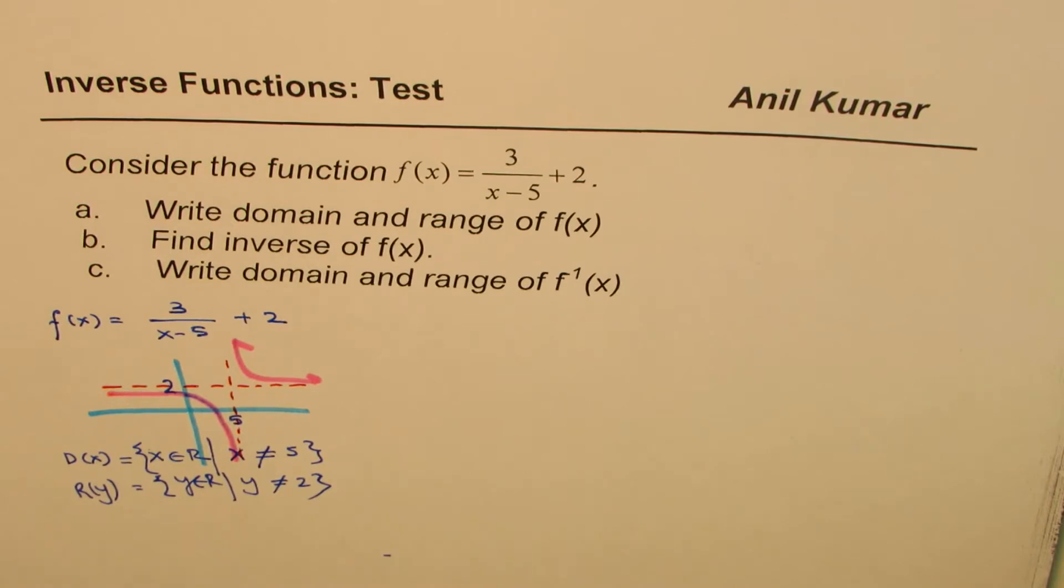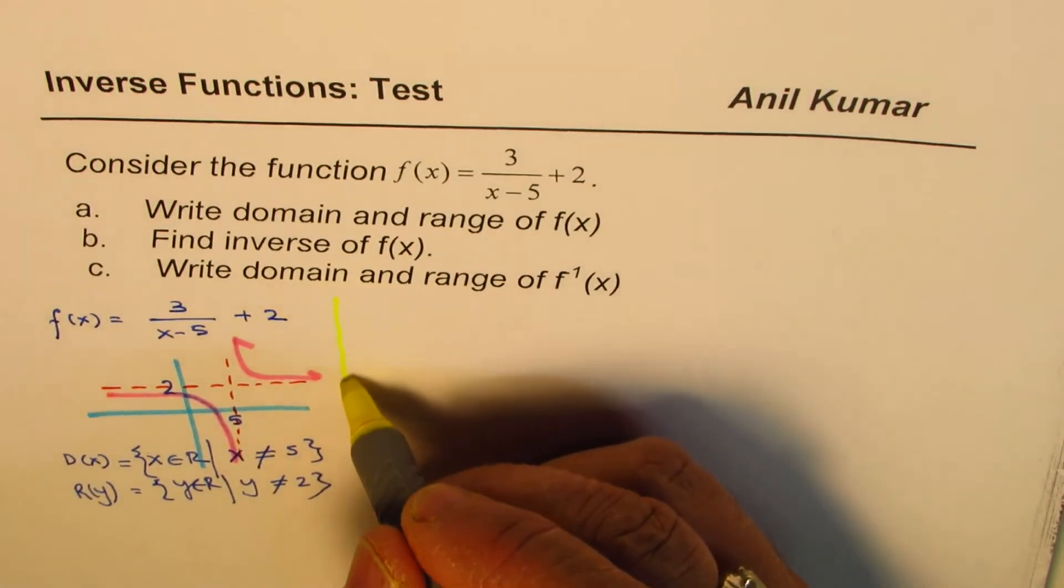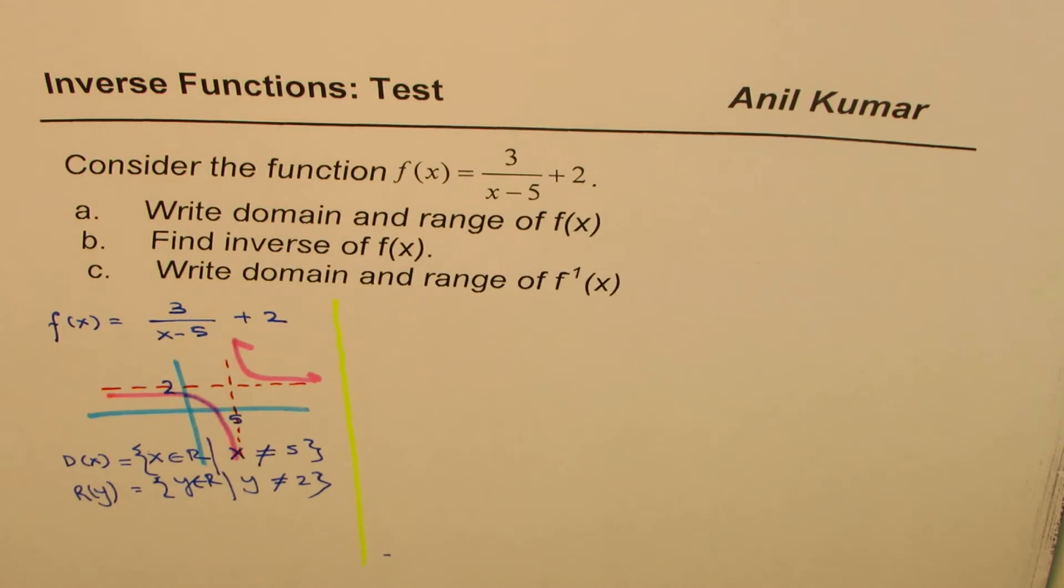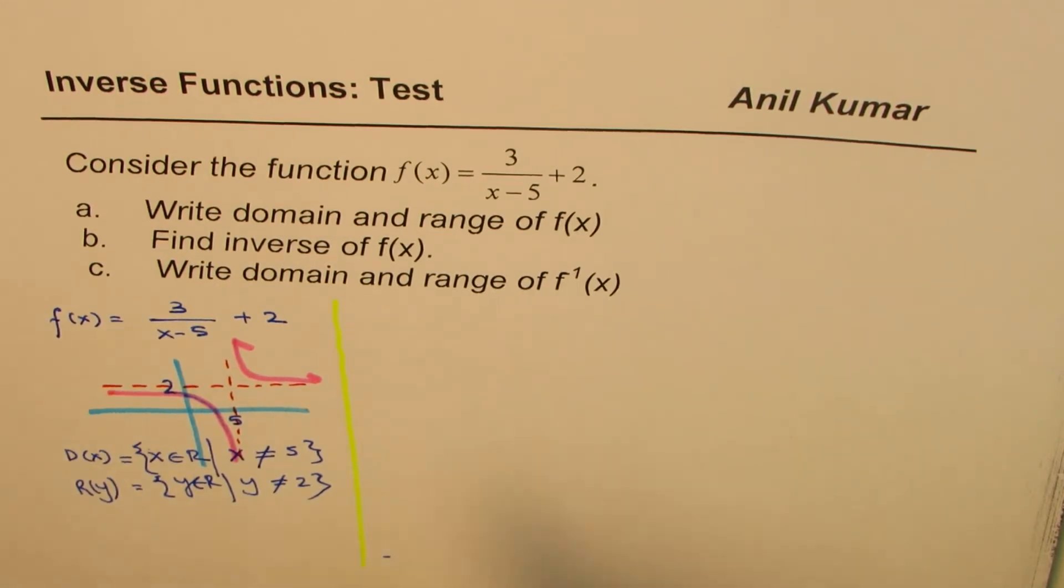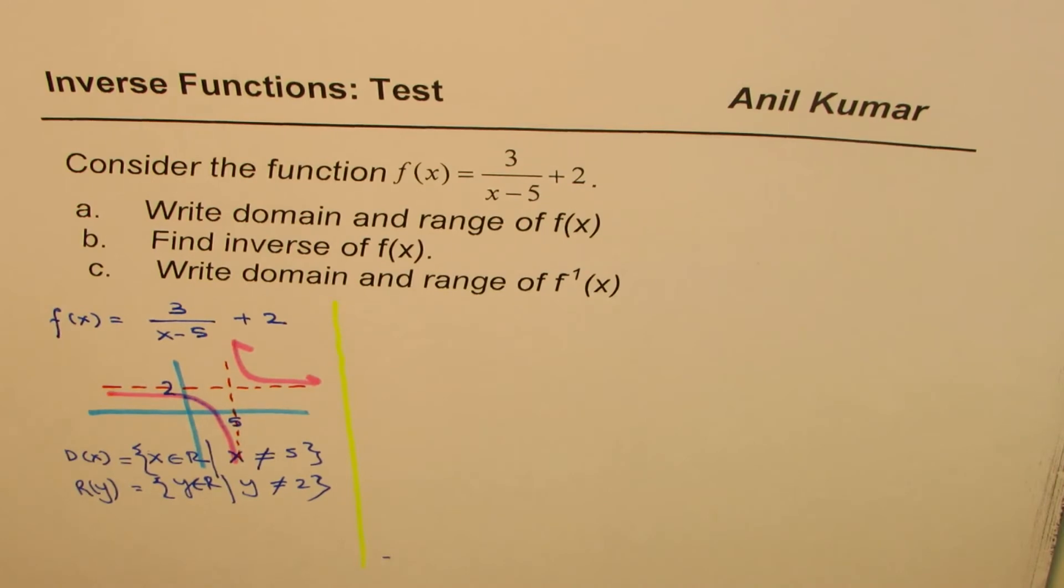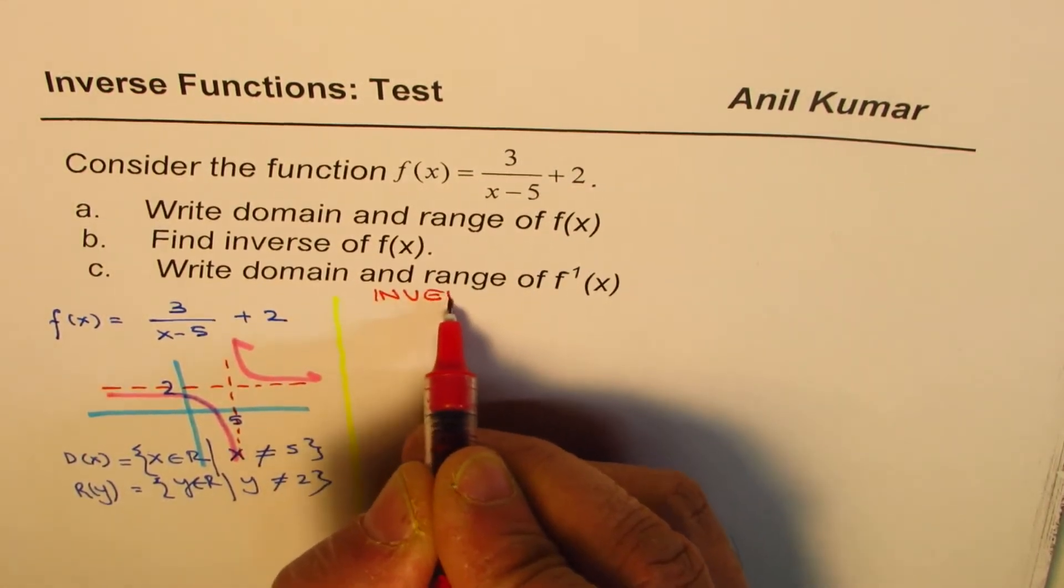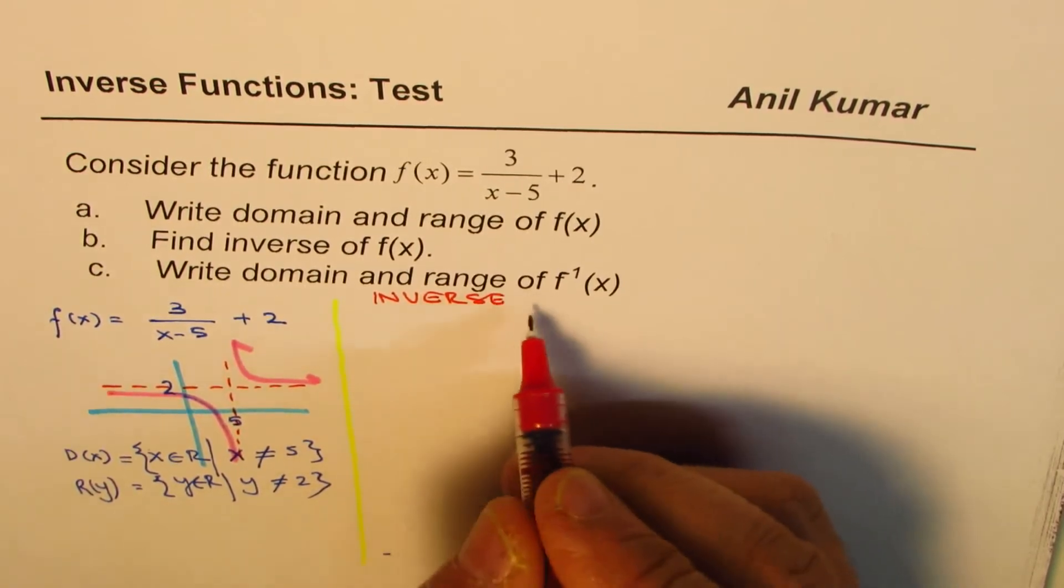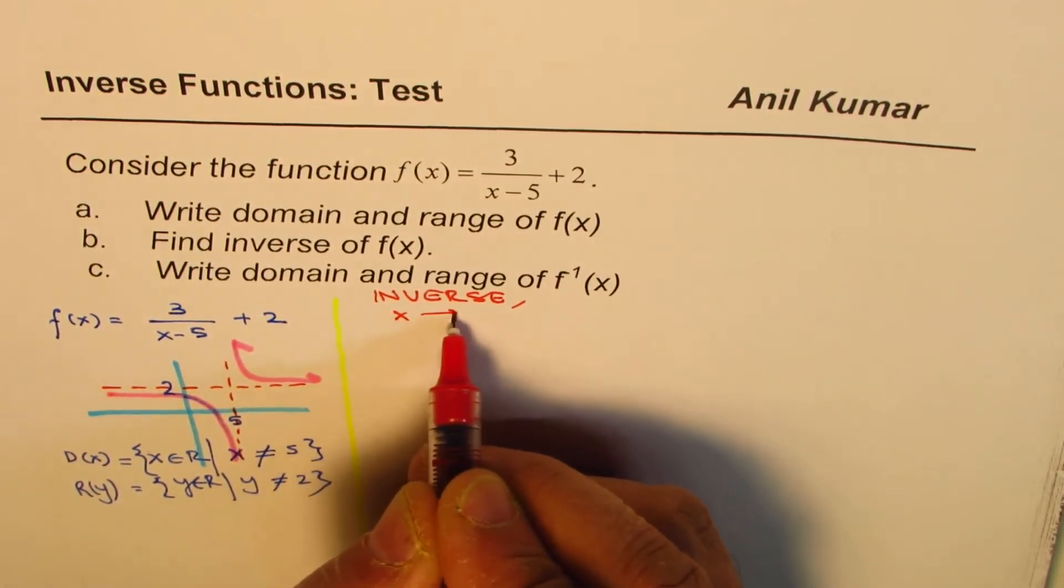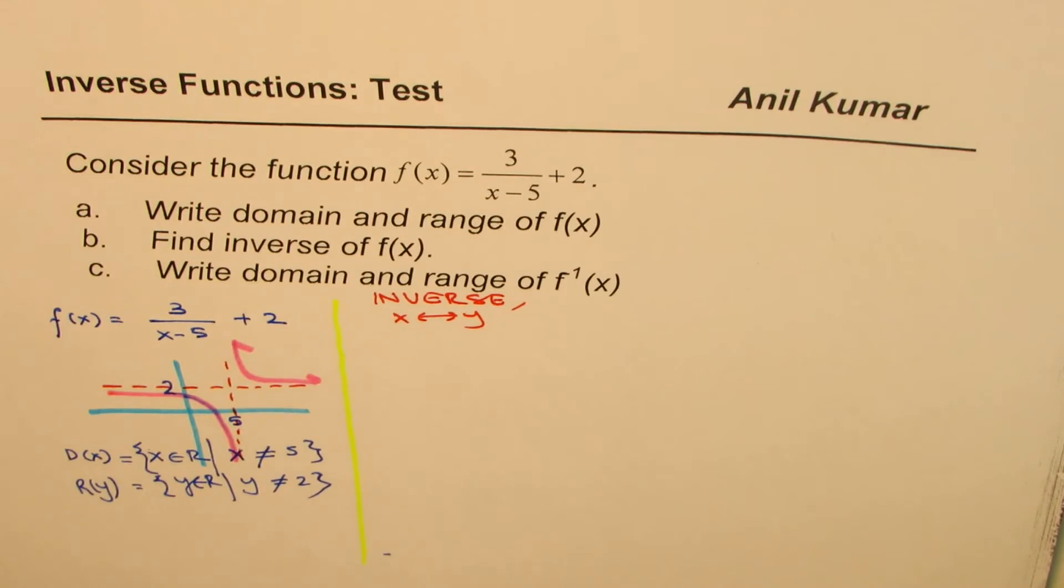Let's move on to find the inverse of the function. Now, it's very tricky how to find inverse of rational functions given like this. To find inverse, we have to swap x and y. So let's see how to find inverse. So first step is, we have to swap x and y. And then solve for y.